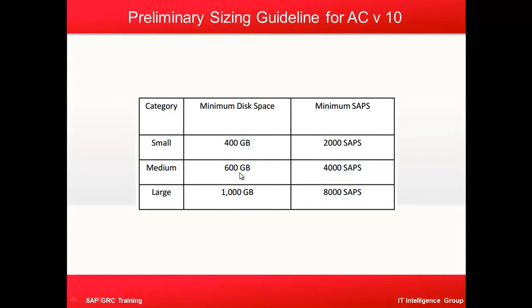Preliminary sizing guidelines for Access Control version 10: for a small system we require a minimum disk size of about 400 GB. For a medium-size system, 600 GB of space and 4,000 SAPS. For a large system, 1,000 GB and 8,000 SAPS. We will now look at what SAPS means and how it is used as a sizing measure.